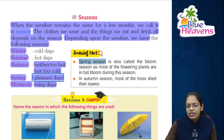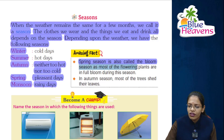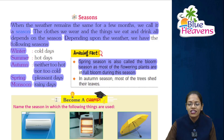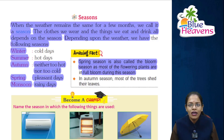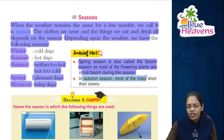Spring season is also called the bloom season, as most of the flowering plants are in full bloom during this season. You know, spring season is called the bloom season. In autumn season, most of the trees shed their leaves — it is called the autumn season.